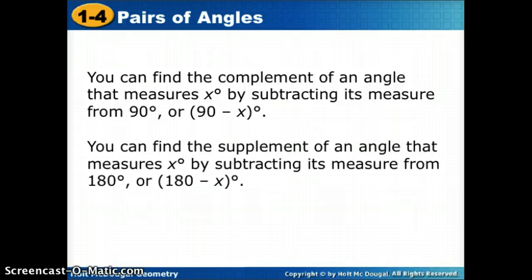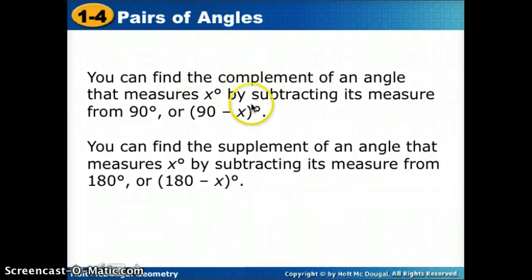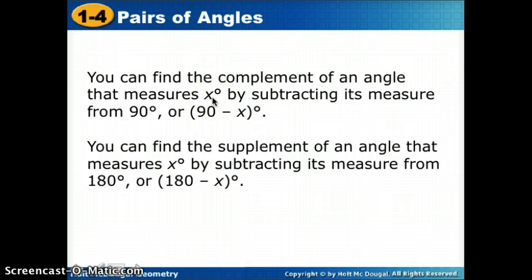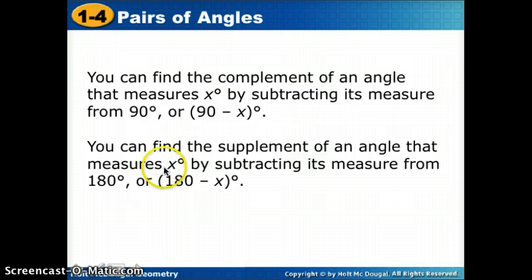When working with different types of problems, we want to find the complement — an angle added to another to get 90 — or the supplement — an angle added to another to get 180. To find the complement of a known angle X, we calculate 90 minus X. To find the supplement, we calculate 180 minus X.